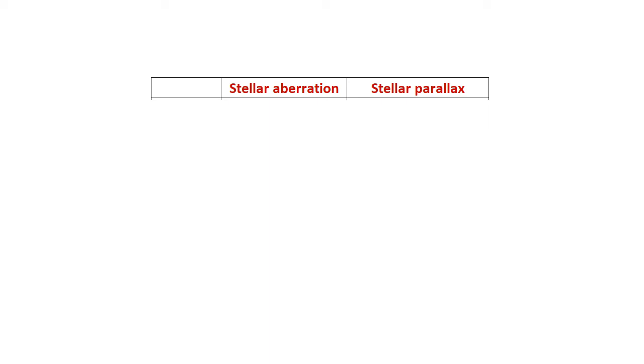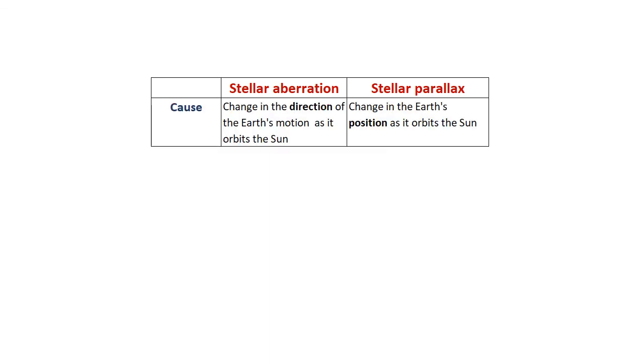So the first difference is that stellar aberration is caused by the change in direction of the Earth's motion as it orbits the Sun. Parallax is caused by the change in the Earth's position as it orbits the Sun.